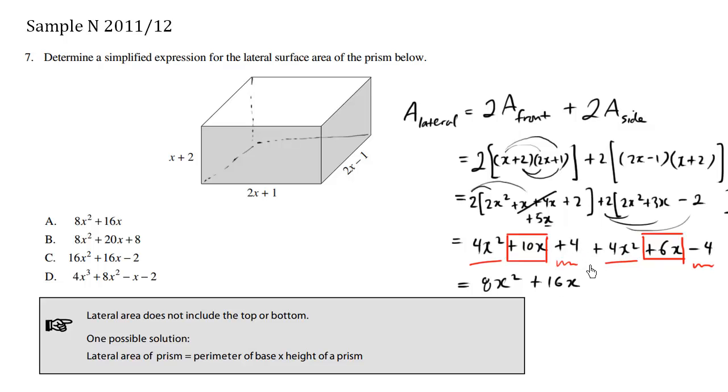And we have the red boxes, which is positive 10x plus 6x is going to be positive 16x. And finally, we have the little red squigglies, which is positive 4, negative 4 is going to be 0. So I'm not going to bother writing plus 0. So our final answer is 8x squared plus 16x. And that looks like choice A. Great.